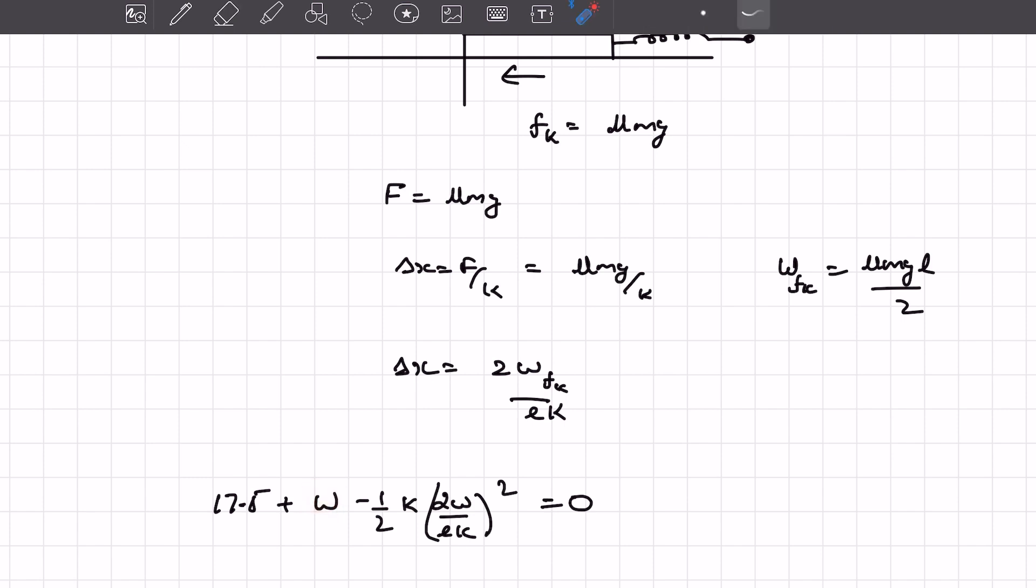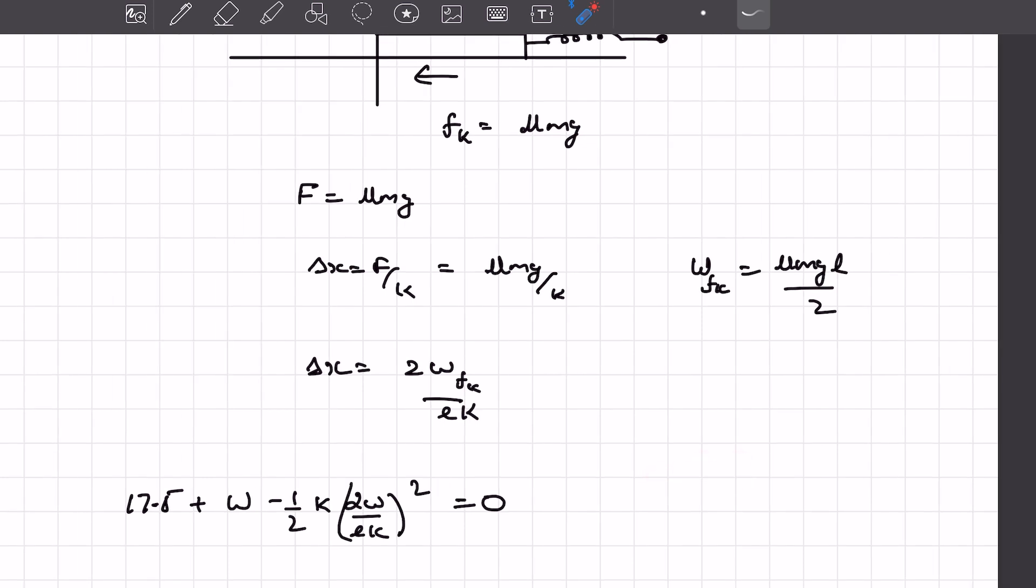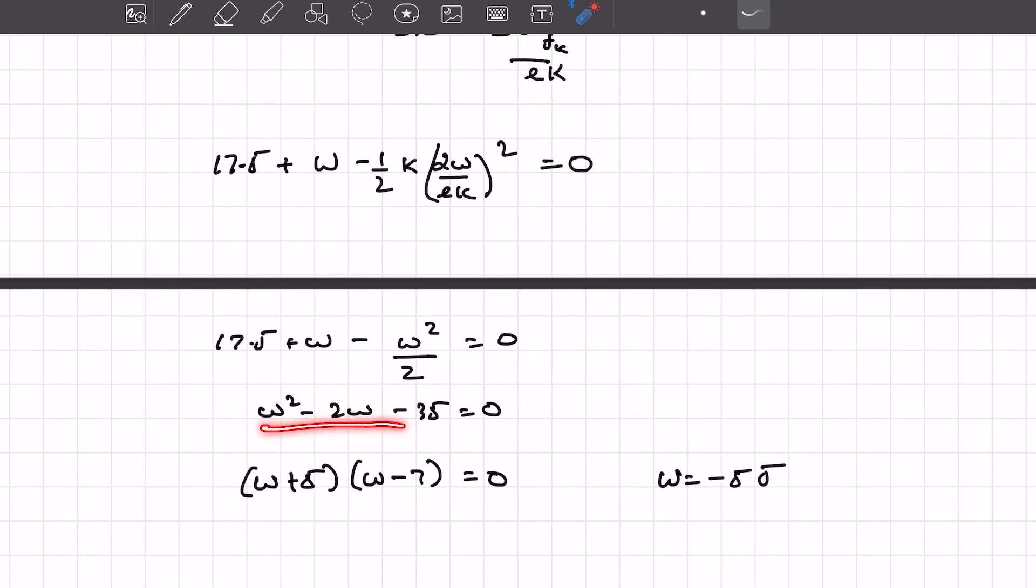And the work done by spring, I just told you, we can write it as negative delta U. So that's why the minus sign, and delta U is half K of the spring times delta X squared. Once you solve it, you'll get a quadratic equation.